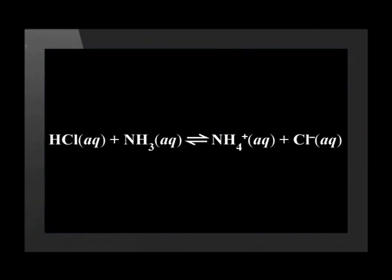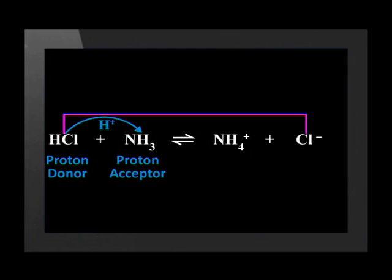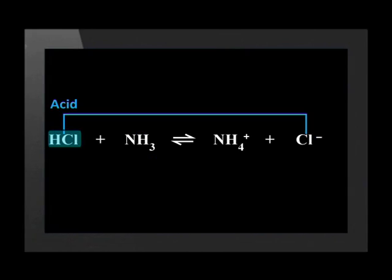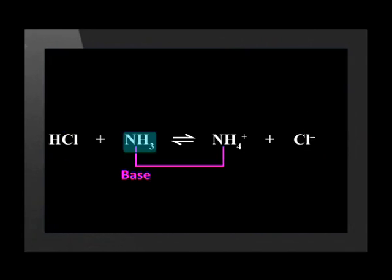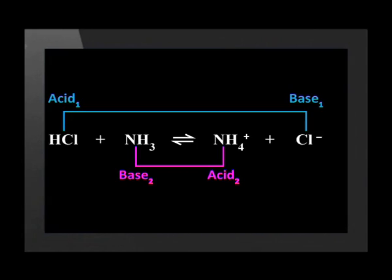Here is another example — try to identify the conjugate acid-base pairs in this reaction. When the forward reaction occurs, HCl donates a proton to NH₃ and in doing so becomes Cl⁻. HCl is a proton donor and is therefore an acid. HCl and Cl⁻ form a conjugate acid-base pair — the conjugate base of the acid HCl is Cl⁻. In the forward reaction, NH₃ is a proton acceptor, as it accepts a proton to become NH₄⁺; NH₃ is therefore a base, and NH₄⁺ is the conjugate acid of NH₃. This is the final reaction showing both conjugate acid-base pairs.